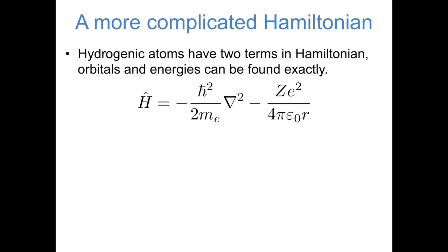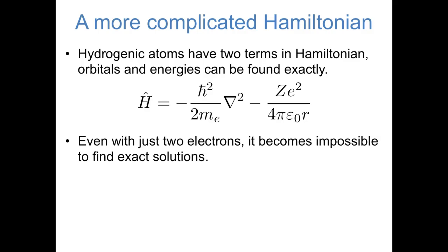As we've seen, the Hamiltonian operator for a hydrogenic atom or ion has two terms, and the orbitals and energies can be found exactly. The first term represents the kinetic energy of the relative motion of the electron and nucleus, and the second term represents the electrostatic attraction — the potential energy between the electron and nucleus. But even when there are just two electrons, in a helium atom for example, it becomes impossible to find exact solutions to the Schrödinger equation, and the Hamiltonian operator gets much more complicated.